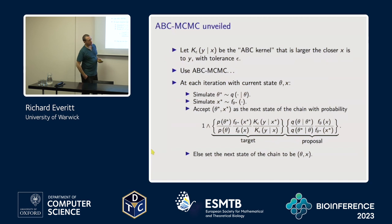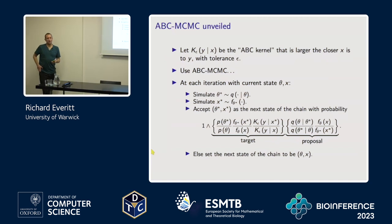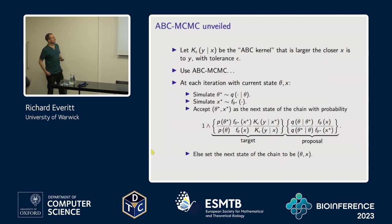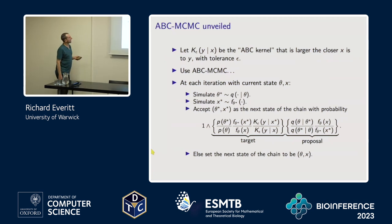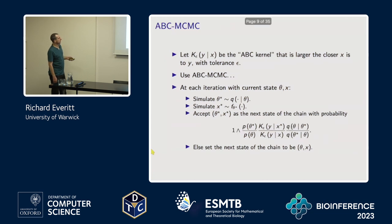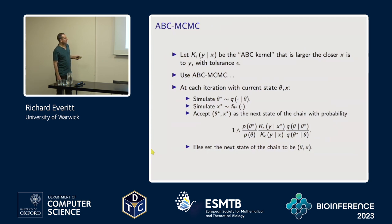So why is ABC problematic in some cases? Why does it not give very good answers? Why does it take a long time to run? Here's a fundamental thing about the algorithm. This is the acceptance probability you end up using — it's got the priors, the ratio of the proposals you always have in Metropolis-Hastings, and it's got evaluating whether the simulations are any good.